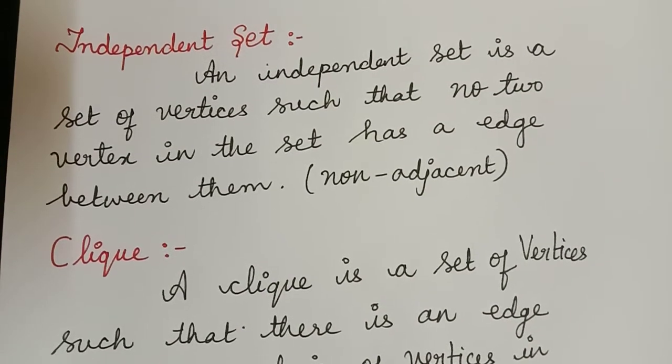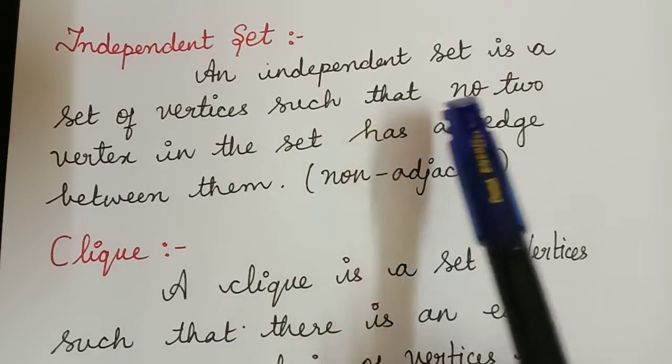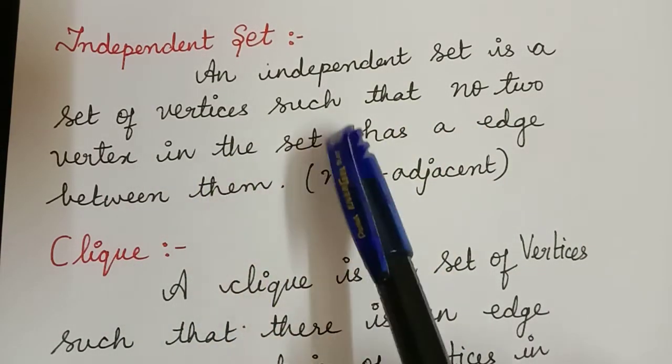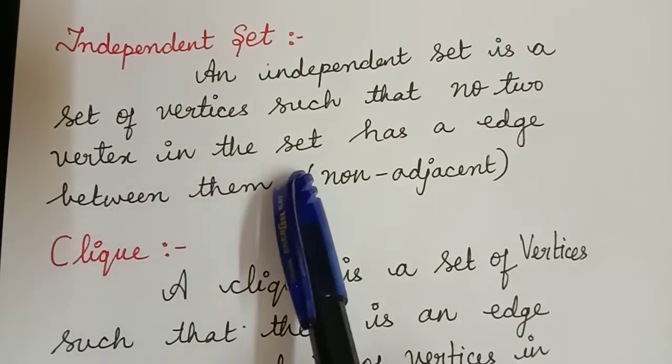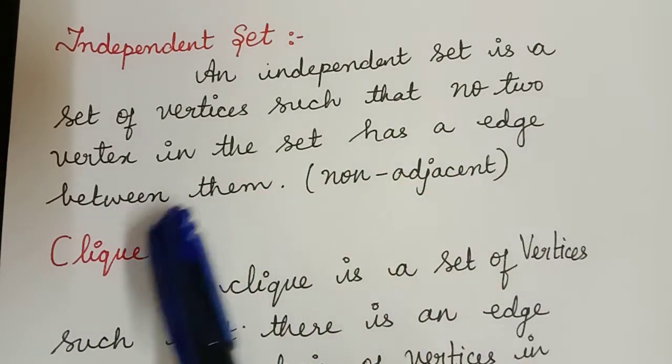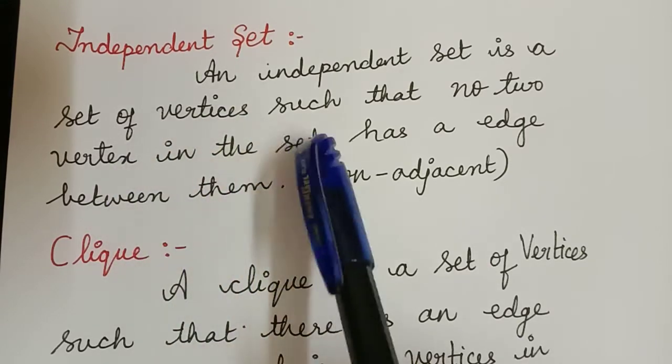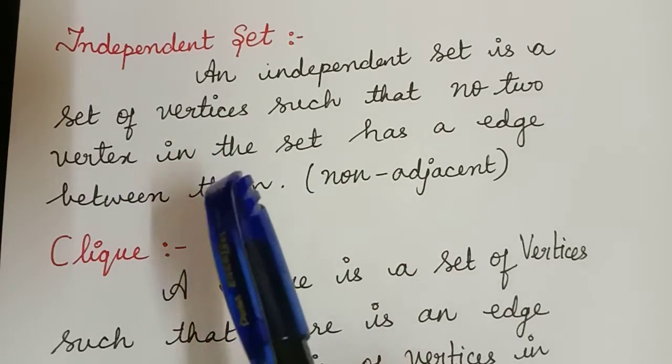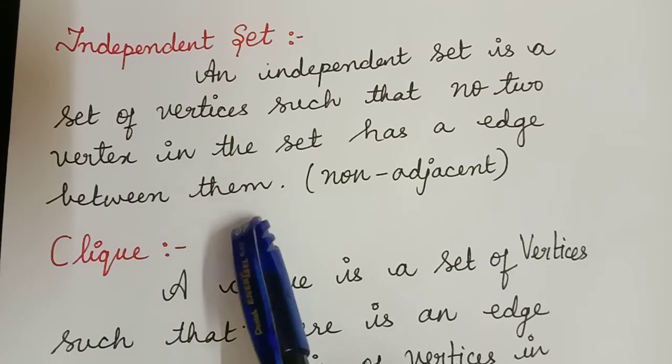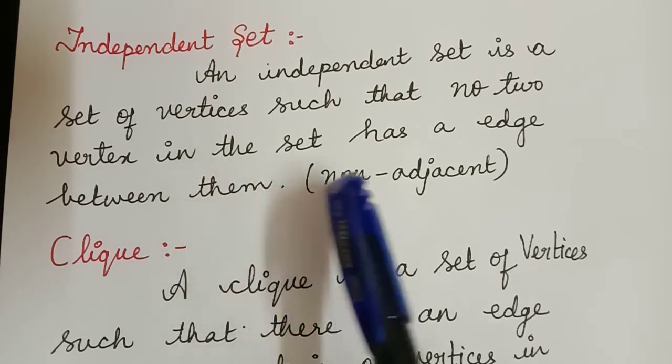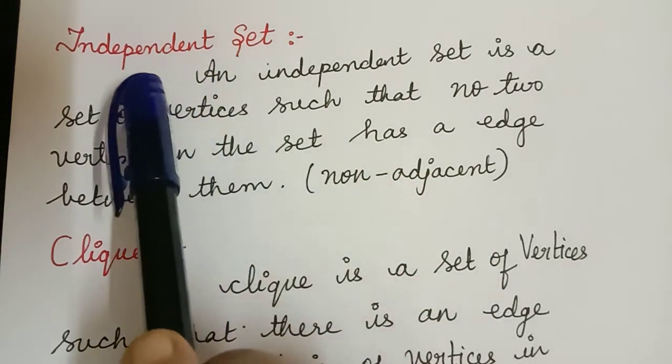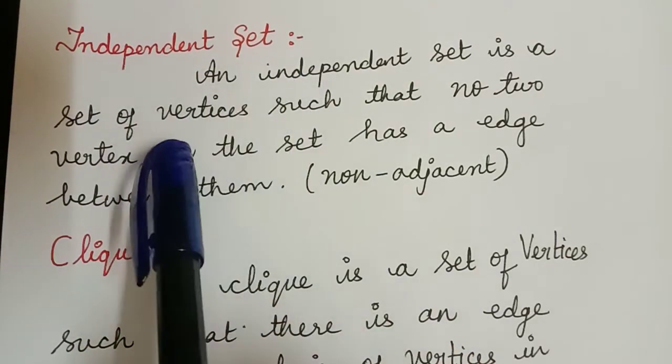Independent set: An independent set is a set of vertices such that no two vertices in the set have an edge between them. We collect those vertices which are not adjacent to one another and form a set known as an independent set.